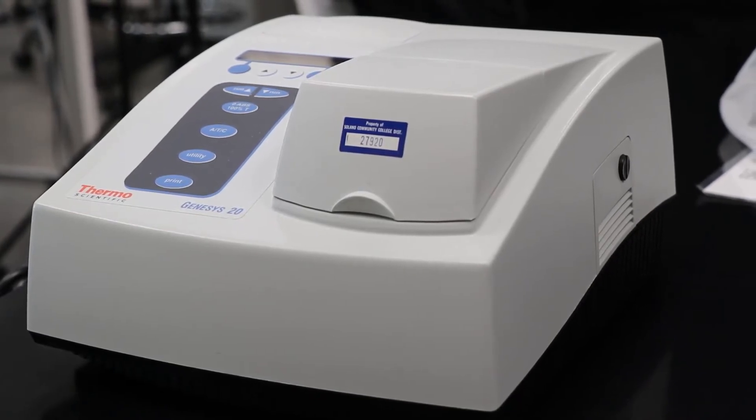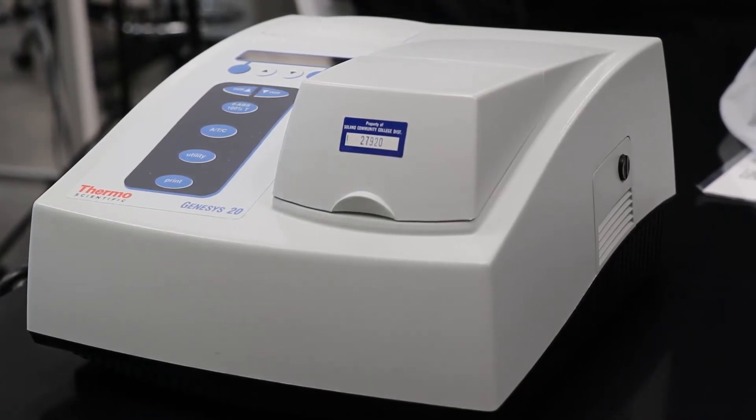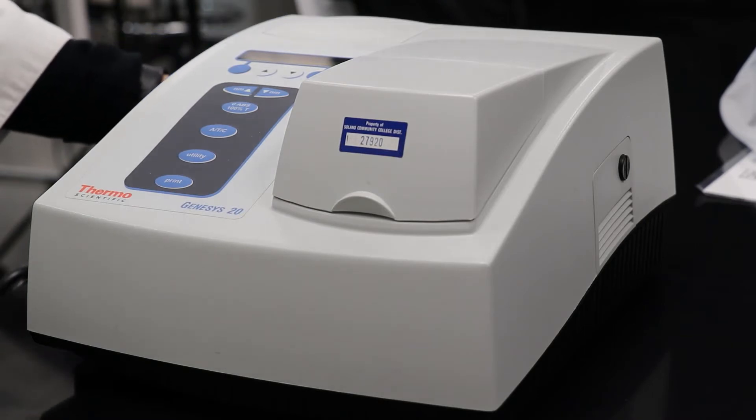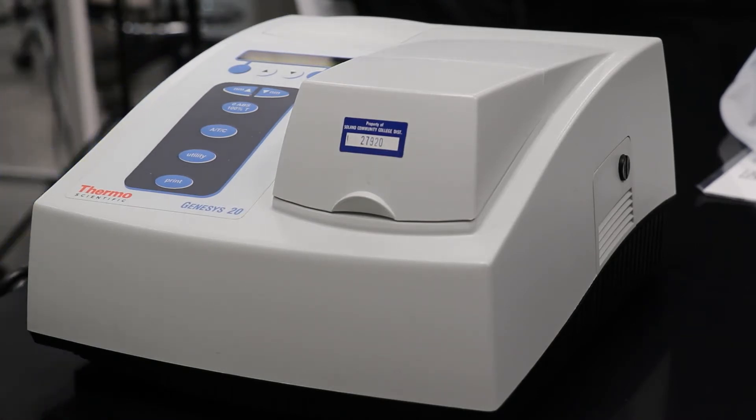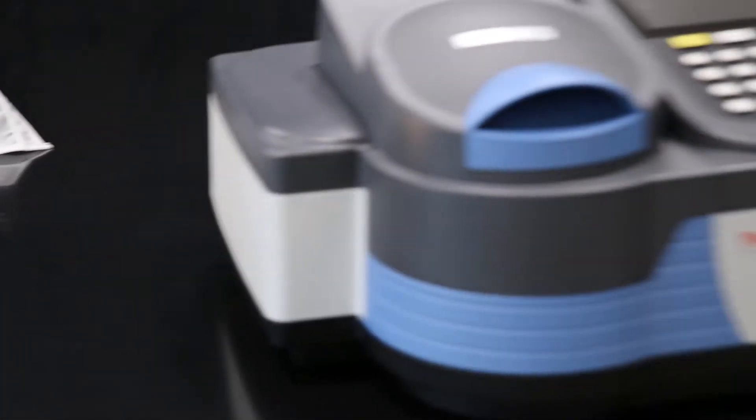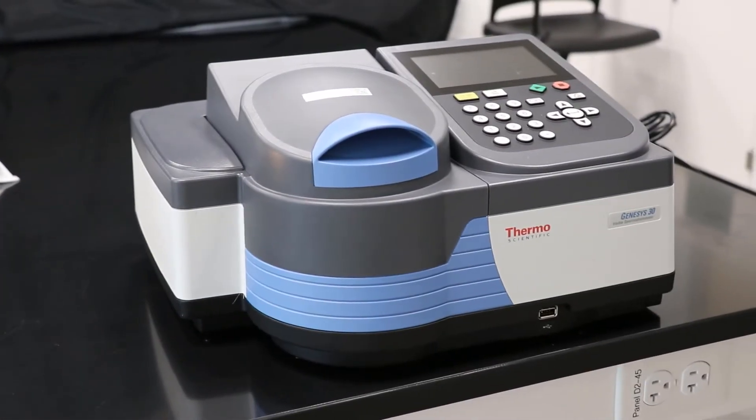It's best to turn on the spectrophotometer and let it warm up while setting up the experiment. This is a Genesis 20 and it turns on in the back. You may use this model or the Genesis 30, which turns on at the side.